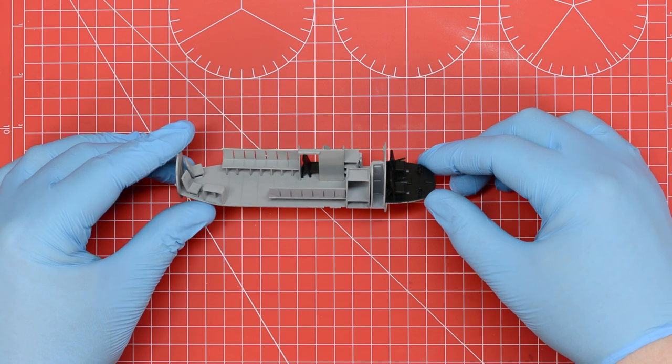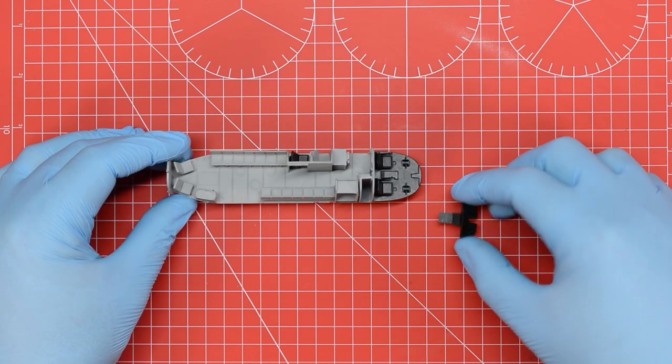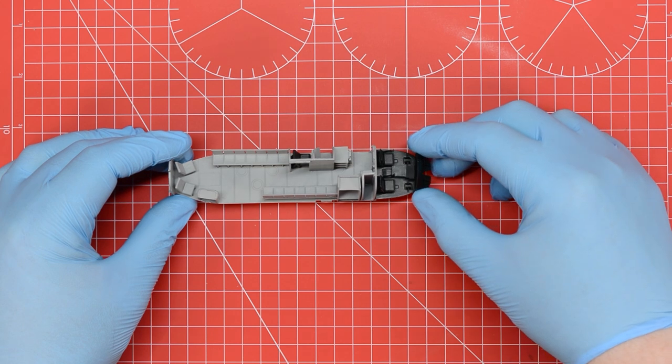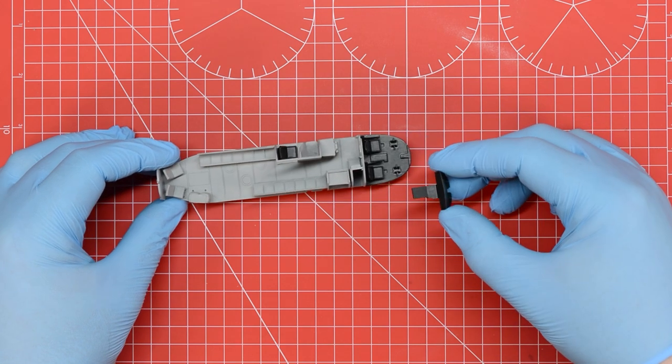The only part that's not fitted at this point is the instrument panel for the cockpit. We haven't glued this in because first we need to add one of the markings from the supplied transfer sheet.